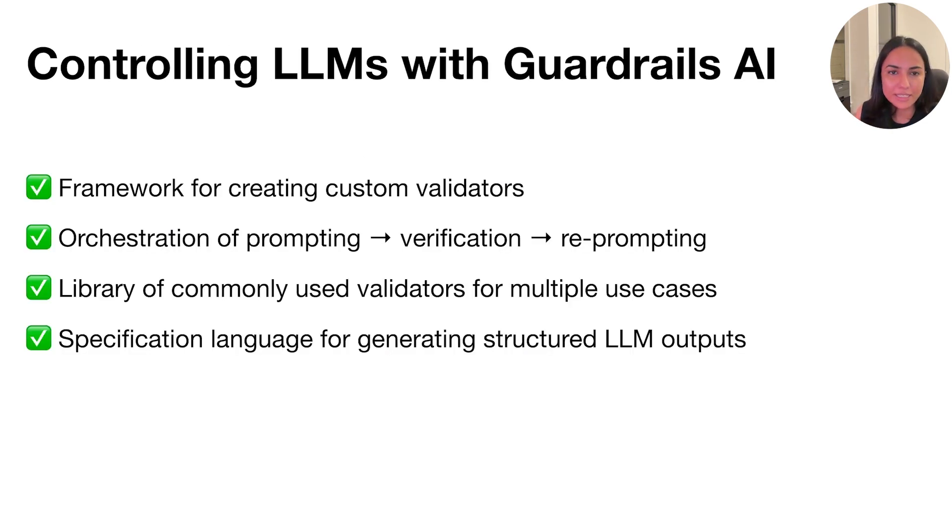So that is a framework that allows us to ensure guarantees. But what does Guardrails AI provide you if you're building LLM applications in this manner? So Guardrails AI, first and foremost, gives you a very general framework for creating custom validators. It also implements the whole orchestration of prompting and verification and re-prompting. It comes with a library of commonly used validators for multiple use cases. We'll get into this later in the tutorial. And also it has a specification language for generating structured LLM outputs. So we're going to dig deeper into generating structured outputs specifically for this tutorial and see what that looks like.